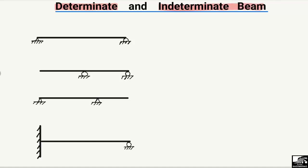Here are different examples that will help clarify the main difference between these two types of beams. I will explain each of these beams — whether it is a determinate beam, an unstable beam, or an indeterminate beam — but first, let's define the determinacy of the beam.